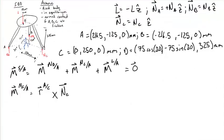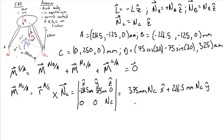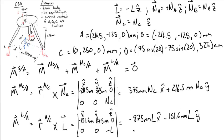Next, let's calculate the moment from N_C about the moment center A. To do this, we take the position vector from A to C and cross it with N_C the vector. Carrying out the cross product, we find that the moment from N_C about A is 375 millimeters times N_C in the x-hat direction, plus 216.5 millimeters times N_C in the y-hat direction.